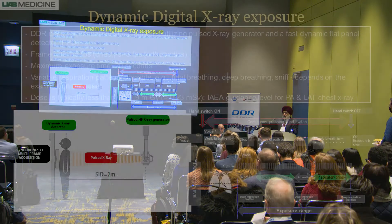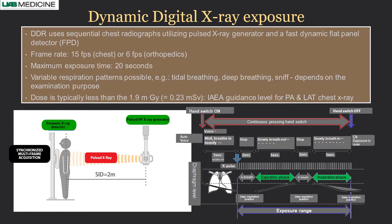Briefly, what it is: it uses sequential pulsed X-ray production from the machine. The X-ray travels through the patient at a distance of two meters from source to plate, and then a flat panel detector takes the images and processes them. When the hand switch is on during patient acquisition, you keep pressing the hand switch for 20 seconds for a complete 20-second exposure, then release the hand switch at the end.